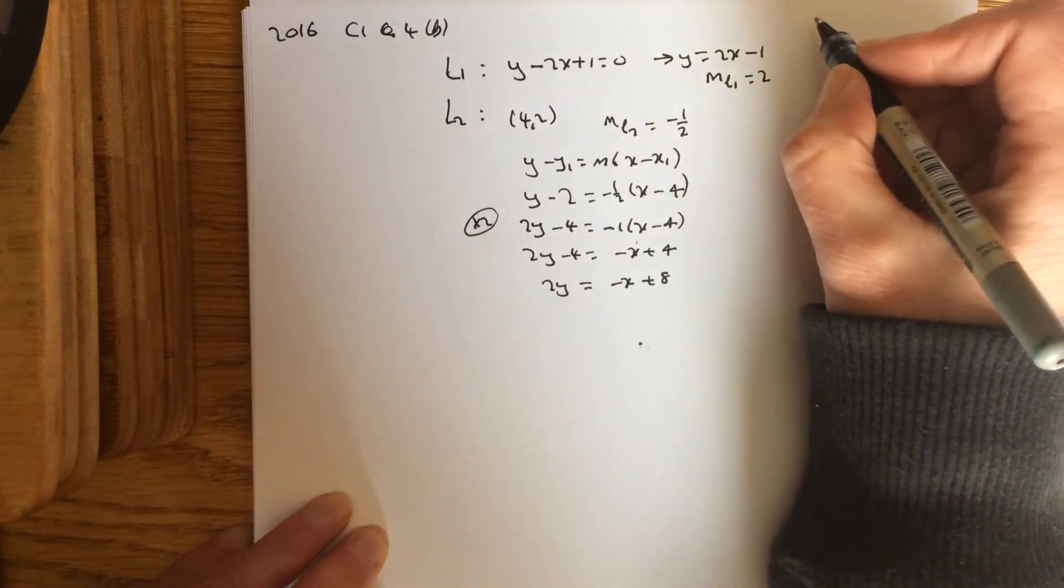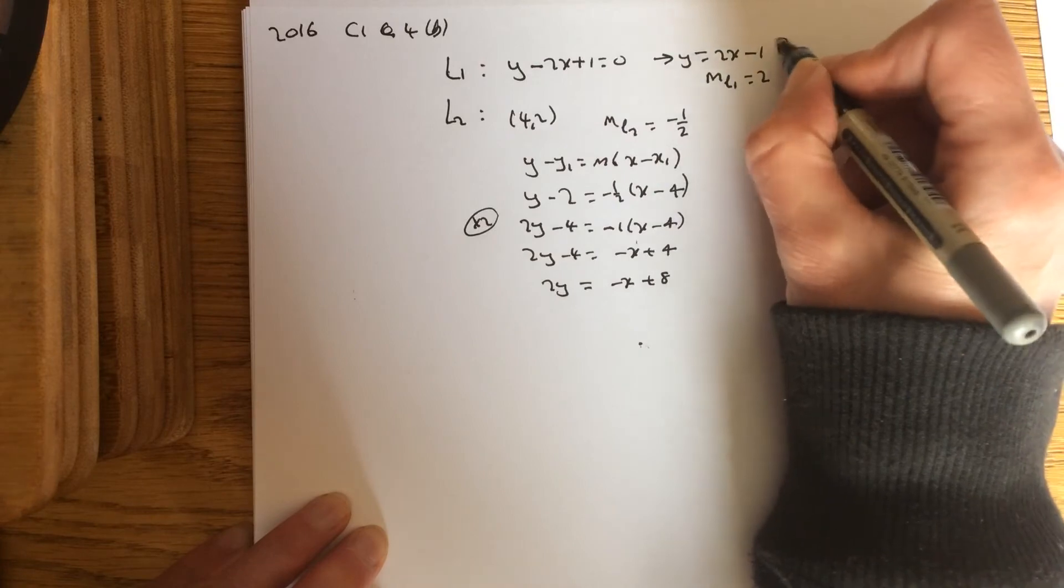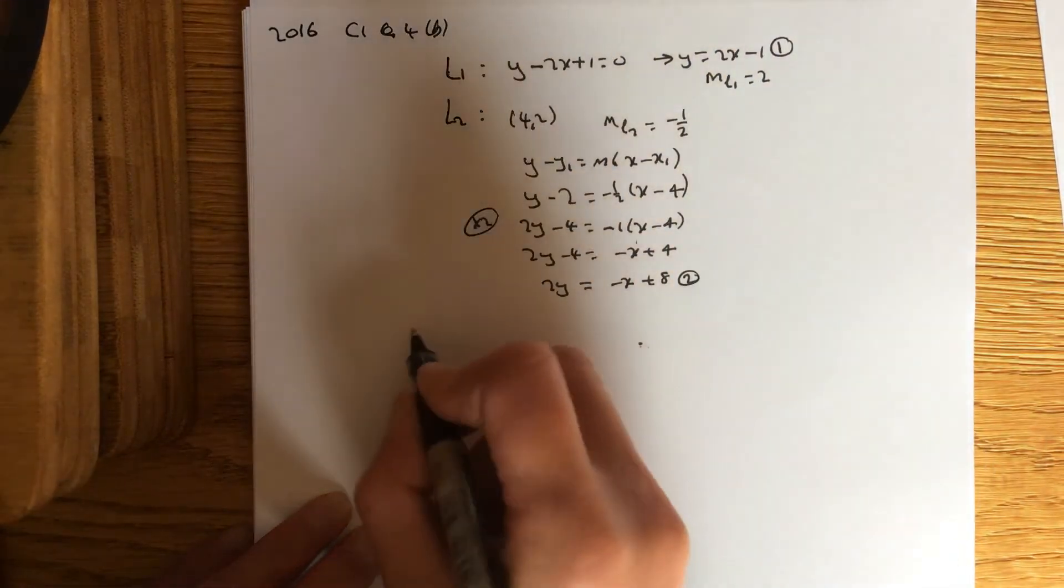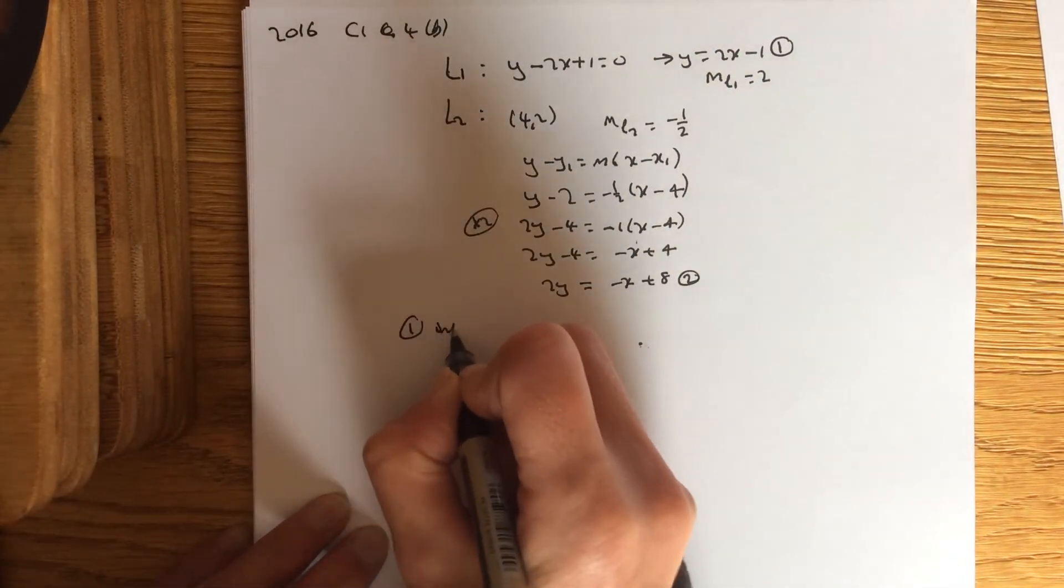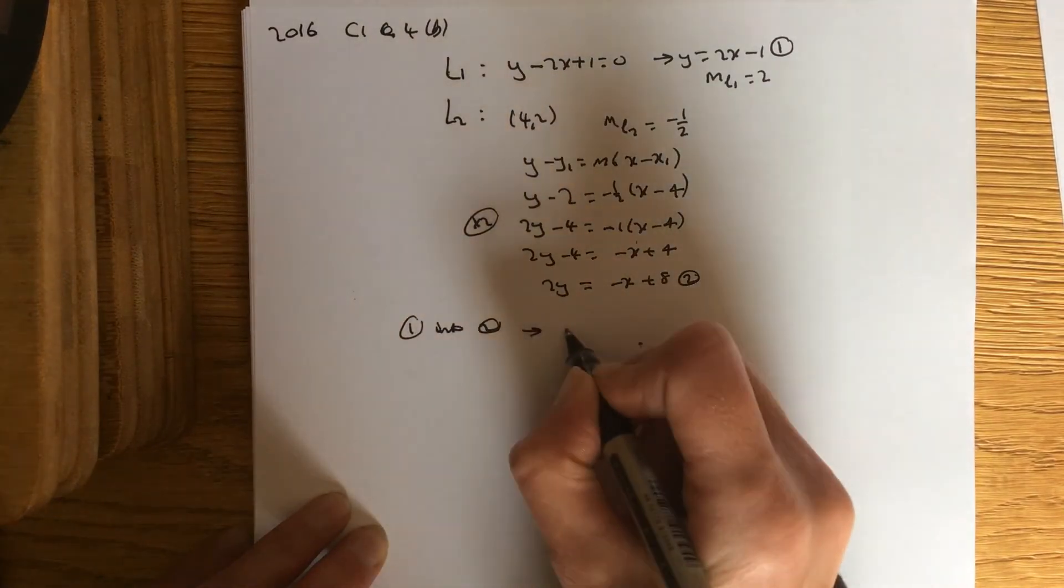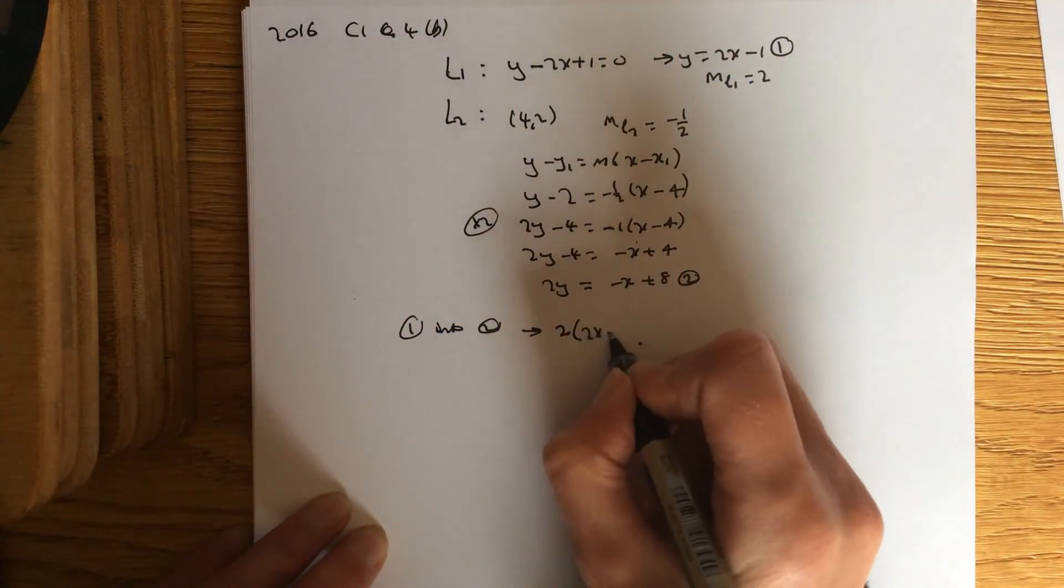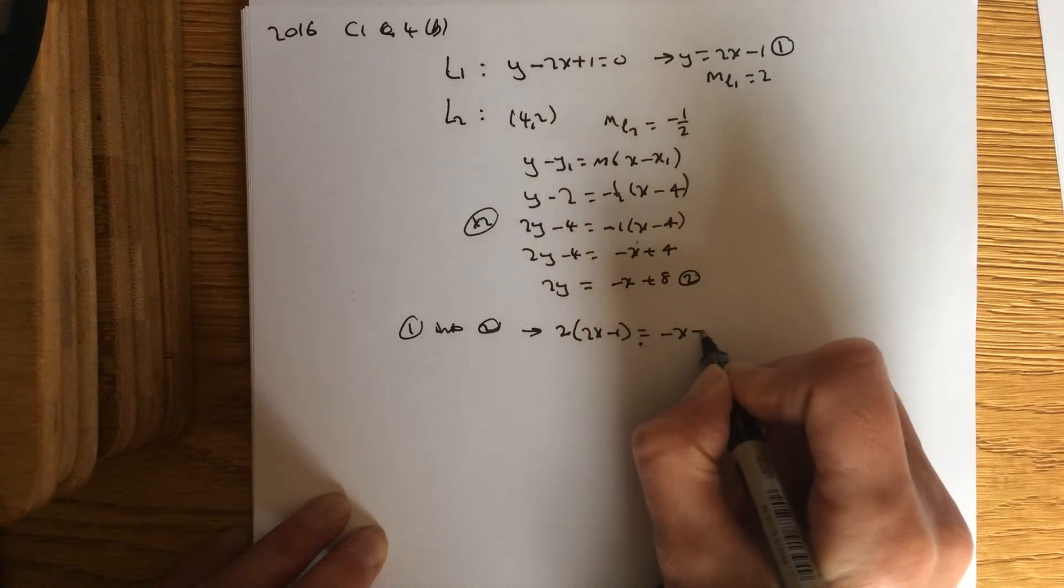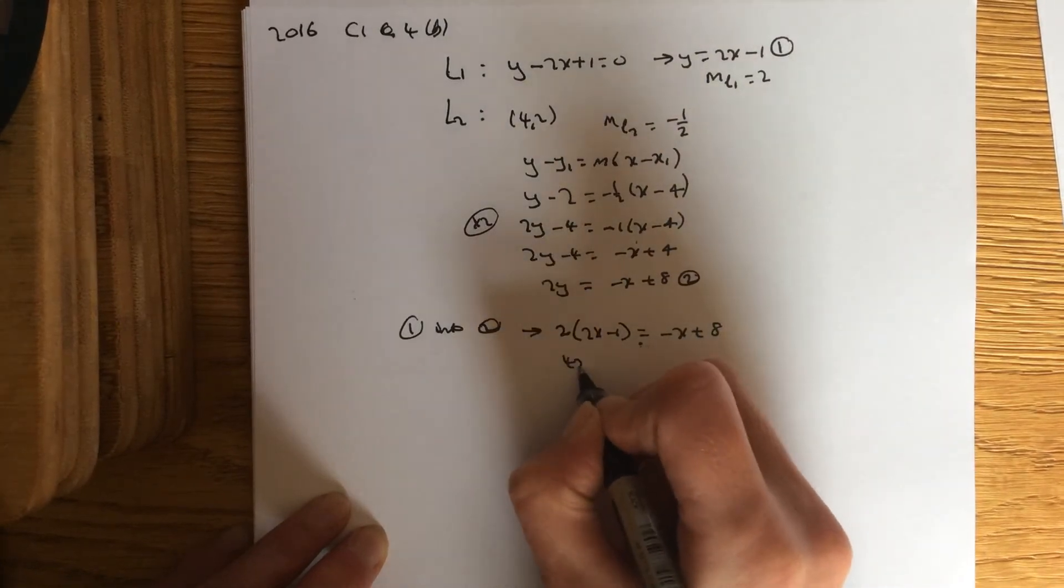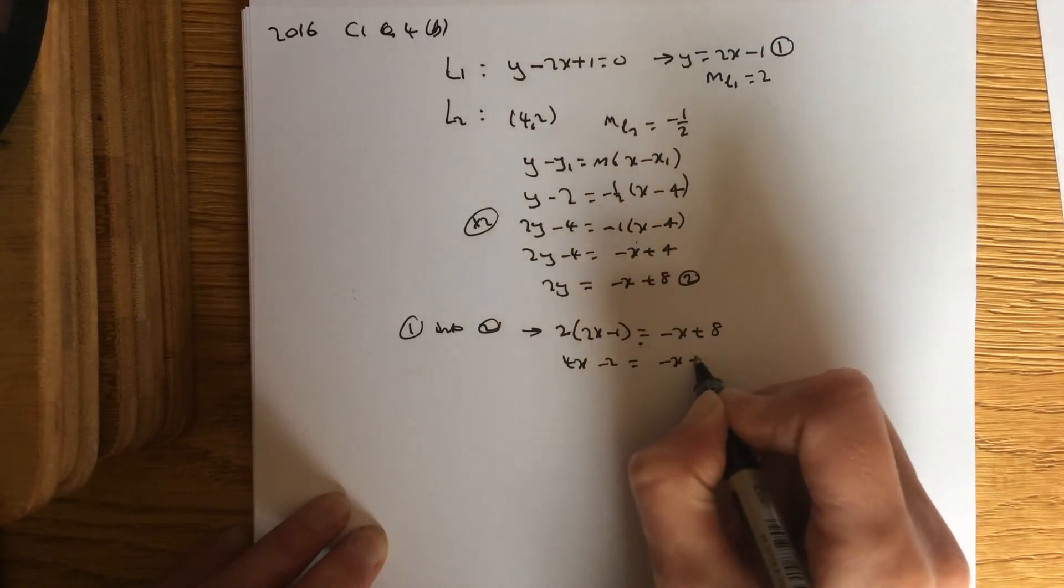Now, I want to find the point of intersection, so I'm going to take this first equation and sub it into the second equation. So 1 into 2. So my second equation becomes 2 times y, which is 2x minus 1, equals minus x add 8. So I've got 4x minus 2 equals minus x add 8.